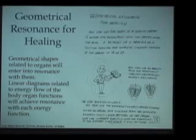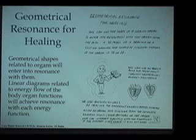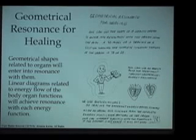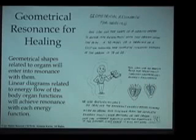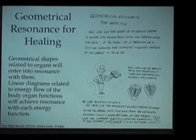That two-dimensional shape contains the information of the function from the three-dimensional energy movement pattern. There's a system that we teach at Level 3, which is very profound, called biosignatures, in which we give the student hundreds of biosignature patterns. They can then test themselves or any other person for what energy circulations are not in the correct flow pattern in the body, and then give them the correct energetic information to restore that flow pattern.